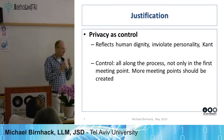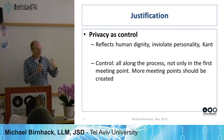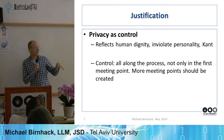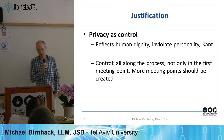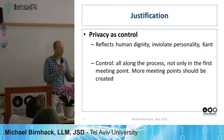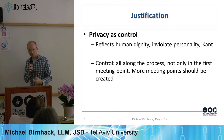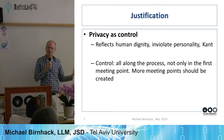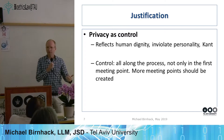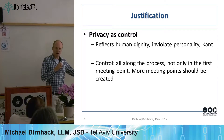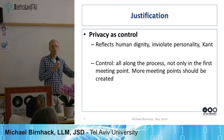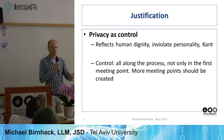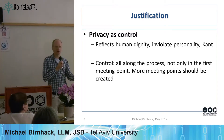Helen Nissenbaum from Cornell Tech, a philosopher of technology, famously offered a framework called 'contextual integrity' for identifying privacy issues. She instructs us to identify the social context, and then within that context to search for its norms about information flow. She would say: the medical context is one of treatment and primary care — what are the norms within this context about who can have access to which kind of information? Then she asks how big data research has changed those norms.